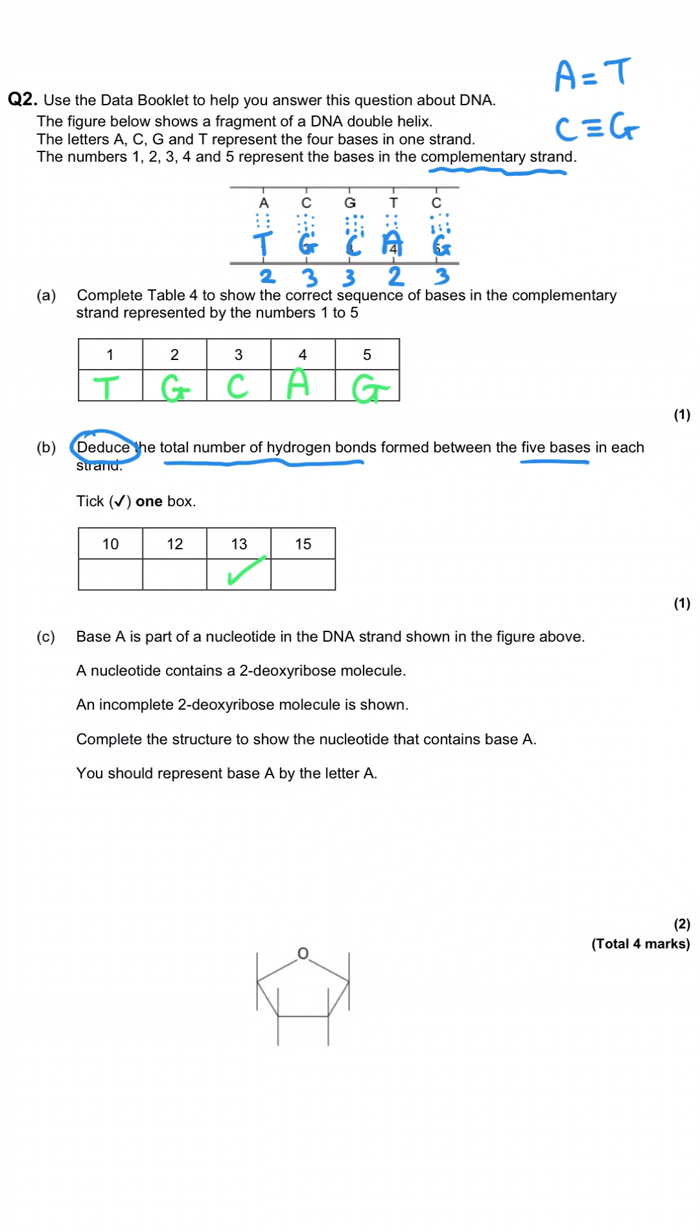And finally, it says base A is part of a nucleotide in the DNA strand shown in the figure above. And so that means shown in this diagram up here. And we've been told that a nucleotide contains a 2-deoxyribose molecule, which we find on our data sheet. An incomplete 2-deoxyribose molecule is shown here. So here it is. And we've been told to complete the structure to show the nucleotide that contains base A. And we're told that we should represent base A by the letter A, which is very nice and generous of them. And so what we have to do here is we have to look at the data sheet and find out what the deoxyribose sugar looks like. And if we fill that in, this is the completed structure of our deoxyribose. And then what happens is the base A moves in in this position here. And remember I said that the bases and all the bases have that N to H group. And what happens is the H from that N to H bonds with the O to H group here and leaves as water.